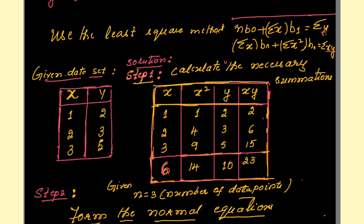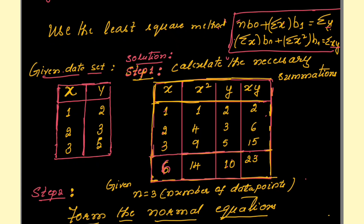To apply the Gauss elimination method, we should know this particular formula. To arrive at the values of m and c, we use: n·b0 + Σx·b1 = Σy as one equation, and Σx·b0 + Σx²·b1 = Σ(x·y) as the other. Here b0 and b1 are the variables; b0 is the value for c and b1 is the value for m.